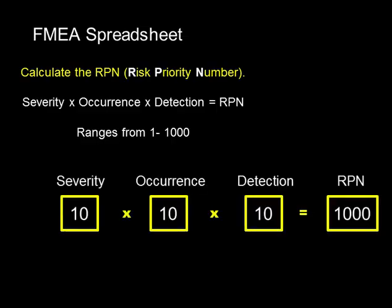The most dangerous thing you could have on an FMEA would be something so severe it could kill or injure someone, it's very likely to occur, and we're not going to see it coming until after the fact — that would give you the highest risk score. The lowest risk score would be something where if it happened no one would even notice, it's only going to happen once every thousand years, and if it does happen we'll see it coming well in advance and can stop it from making an impact.